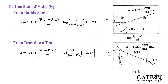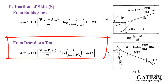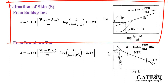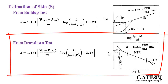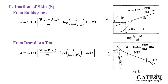Skin can be estimated from both buildup and drawdown tests. The difference between the two equations is that P_1hour in the buildup test is generally greater than Pwf because the well is shut in to allow pressure to build up. In the drawdown case, pressure was at stabilized initial pressure PI, and after one hour of production at constant rate, P_1hour is lower than the initial pressure.